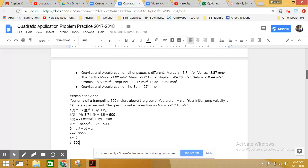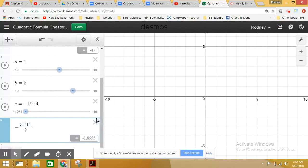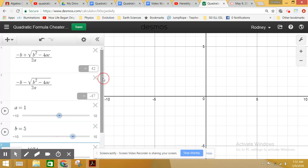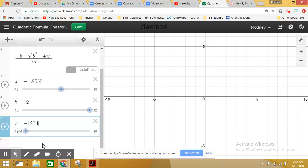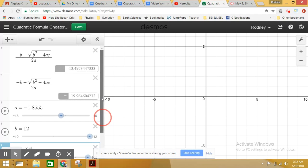So I have conveniently set up a cheat graph for us to plug all that stuff in. If I go over here to my quadratic formula cheater graph, I have created a plus version of the quadratic formula and a minus version. So this is negative B plus or minus the square root of B squared minus 4 A C all over 2 A. I know that my A part was negative 1.8555. My B part was my initial velocity of 12. And my C part of it was 500.